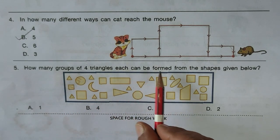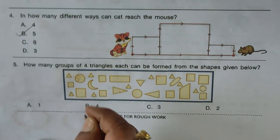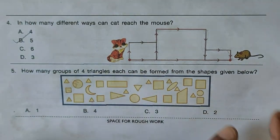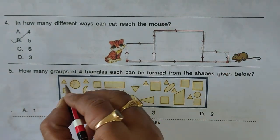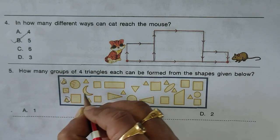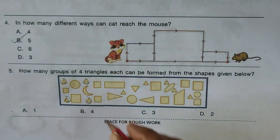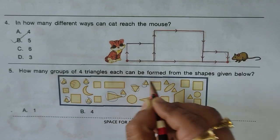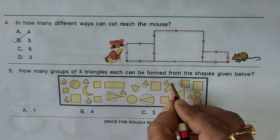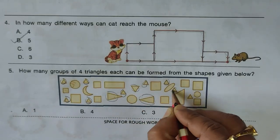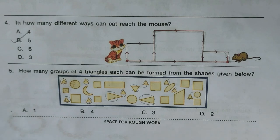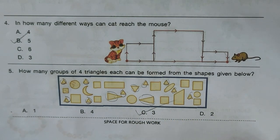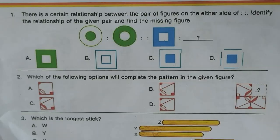Next question: how many groups of four triangles can be formed from the given shape? First group of four, second group of four, third group of four — only three groups are possible. Hence option C is the right answer.